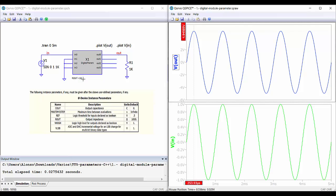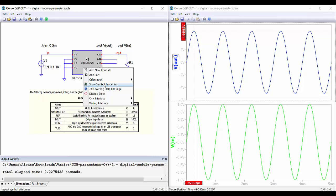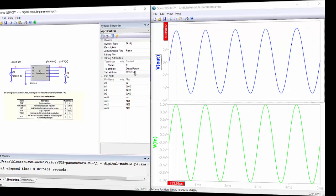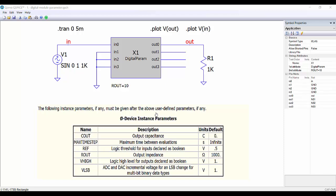If we go to the properties here, so symbol properties, then we can see that we have added this new attribute with the value of the output resistance. Now let's see how to include user-defined parameters.